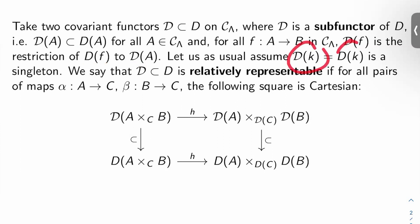We'll assume script D of K and D of K are the same, and they're both a singleton, and we'll say that script D in D is a relatively representable sub-functor if for all pairs of maps alpha from A to C and beta from B to C, the following square is Cartesian. So script D of A cross B over C to script D of A cross script D of B over script D of C. So this is the map H we've been talking about for a while now.